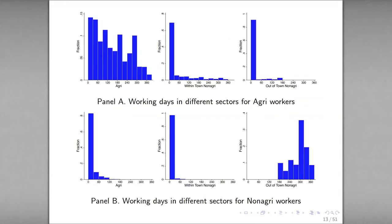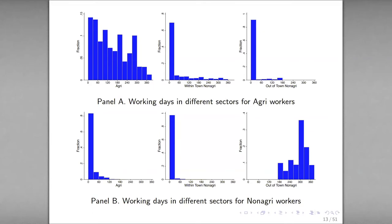Based on our definition of agricultural and non-agricultural workers, we present the distribution of working days in different sectors. The upper panel shows that most agricultural workers have zero working days in the within-town non-agricultural sector and out-of-town non-agricultural sector. For non-agricultural workers, the majority have zero working days in the agricultural sector and within-town non-agricultural sectors. We define the sector of work based on whether you work out of town.